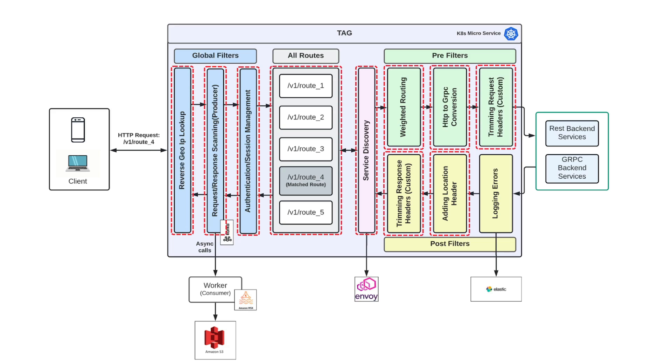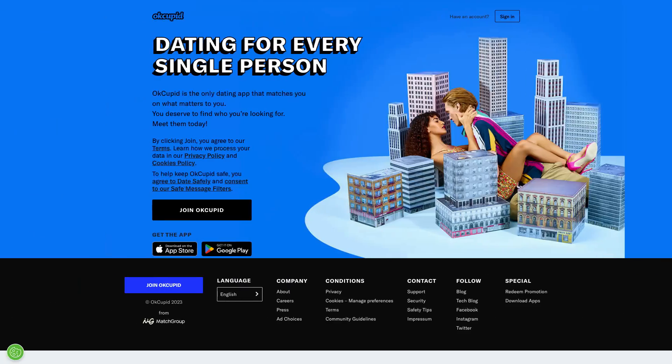Finally, after completing the list of post-filters, the final response is returned to the client. Application teams at Tinder are using TAG as a standard framework for building their own API gateways by just writing a couple of configurations specific to their use case, and they can be scaled individually when needed. TAG is also used by other dating companies like Hinge and OkCupid, so it's kind of become a standard in this realm of applications.